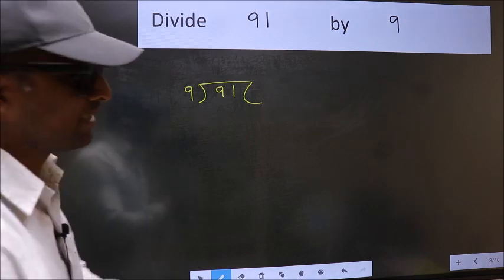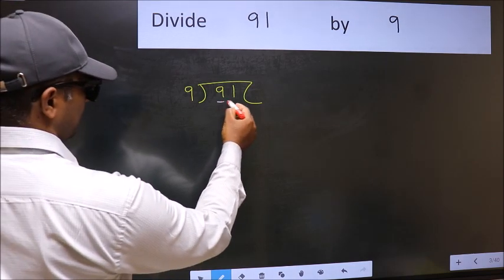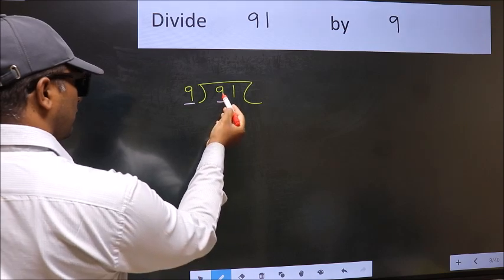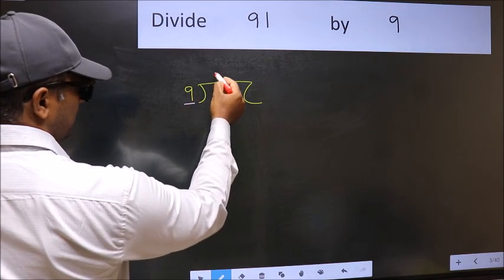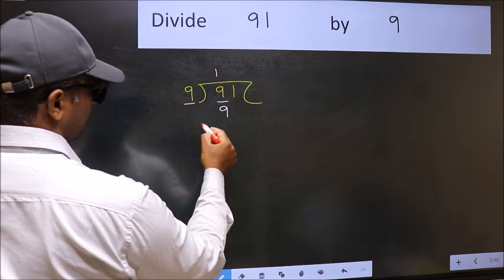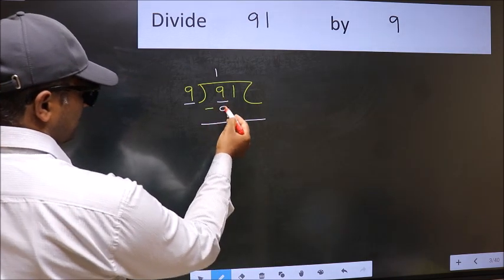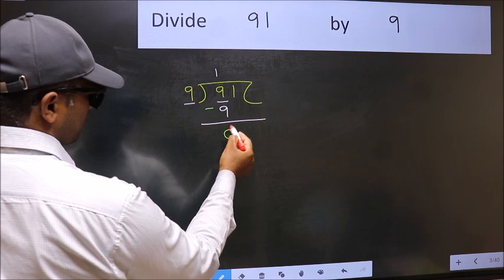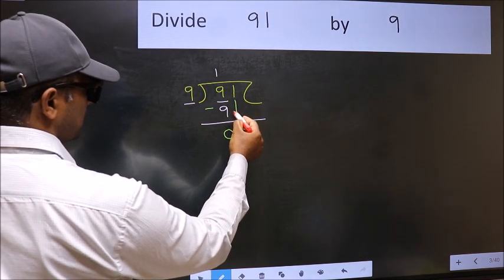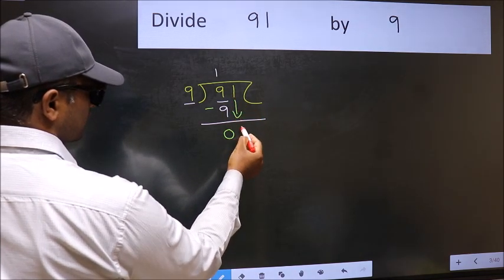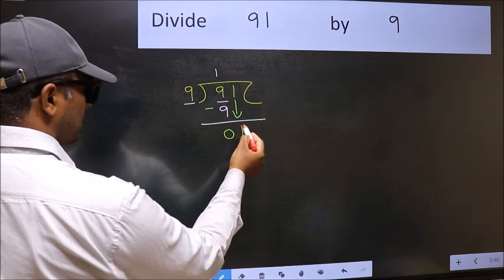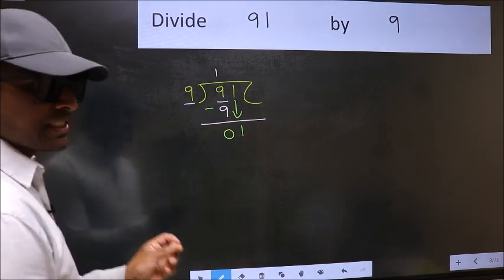Next, here we have 9 and here also 9. When do we get 9 in 9 table? 9 once 9. Now we should subtract: 9 minus 9, 0. After this, bring down the beside number. So 1 down. After this step, the mistake happens.